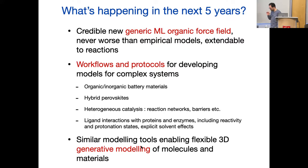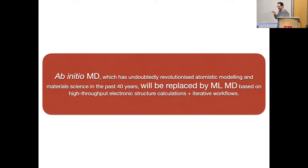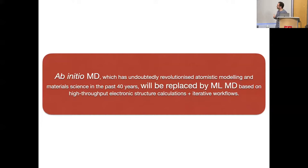People are beginning to think about how to use the same tools — instead of regression, to do generative modeling: create new materials, create new molecules using property fitting. I want to leave you with a bold prediction: ab initio MD, or First Principles Molecular Dynamics, which has changed how we do atomistic modeling over 40 years and had huge success, I think is dead. It will be replaced by machine-learned molecular dynamics, which coarse-grains the electrons away in a systematic way, once you have good control of the errors and have the workflows.